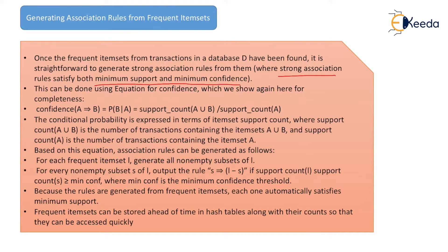This can be done using the equation for confidence, shown here for completeness: confidence(A→B) equals P(B|A), which equals the support count of A union B divided by the support count of A. The conditional probability is expressed in terms of itemset support counts. Support count of A union B is the number of transactions containing itemset A union B, and support count of A is the number of transactions containing itemset A.